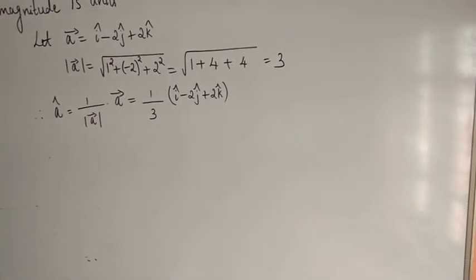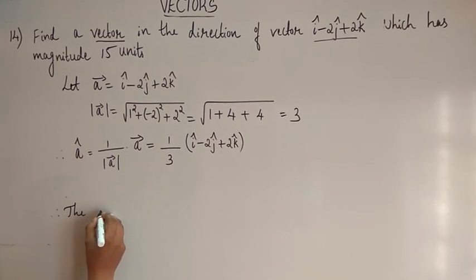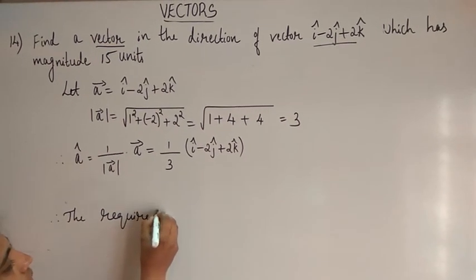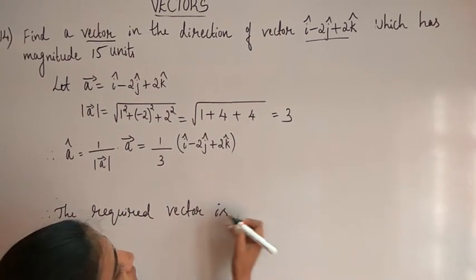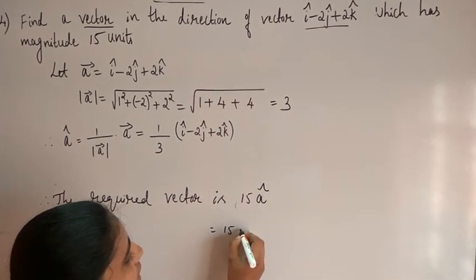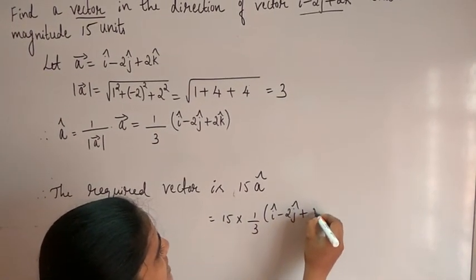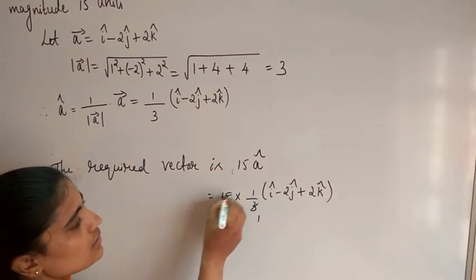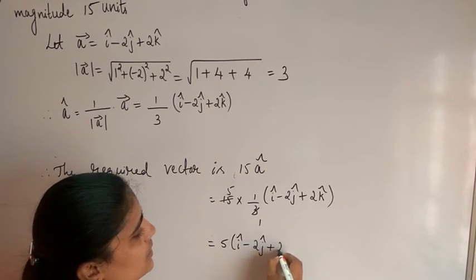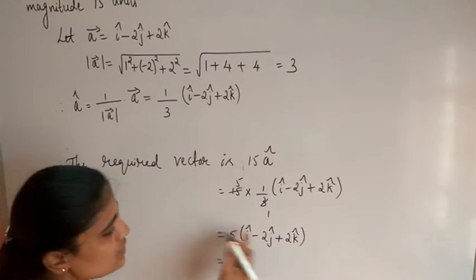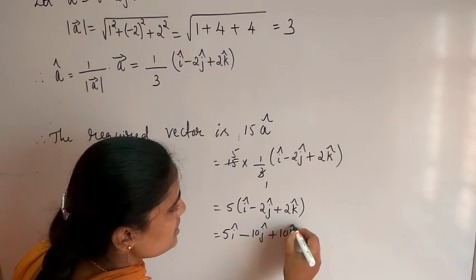Since the magnitude is 15 units, the required vector is 15 into A-cap, which equals 15 into 1 by 3, into (i-cap minus 2j-cap plus 2k-cap). Simplifying: 15 divided by 3 is 5, so the required vector is 5 into (i-cap minus 2j-cap plus 2k-cap), which equals 5i-cap minus 10j-cap plus 10k-cap. This is the required vector.